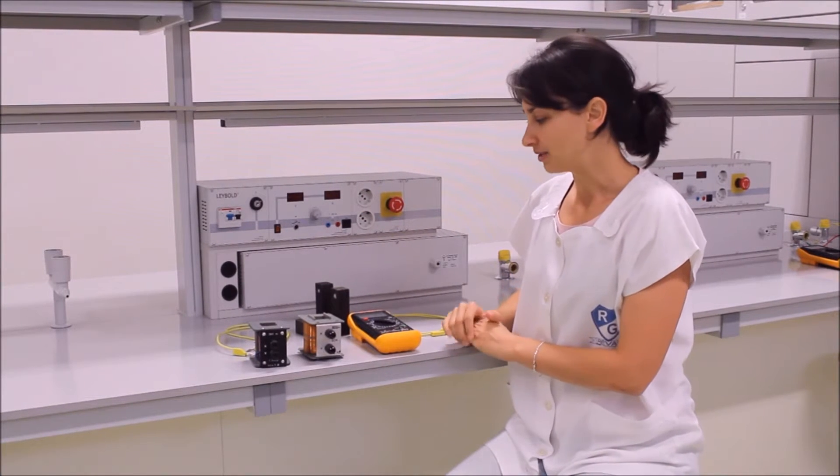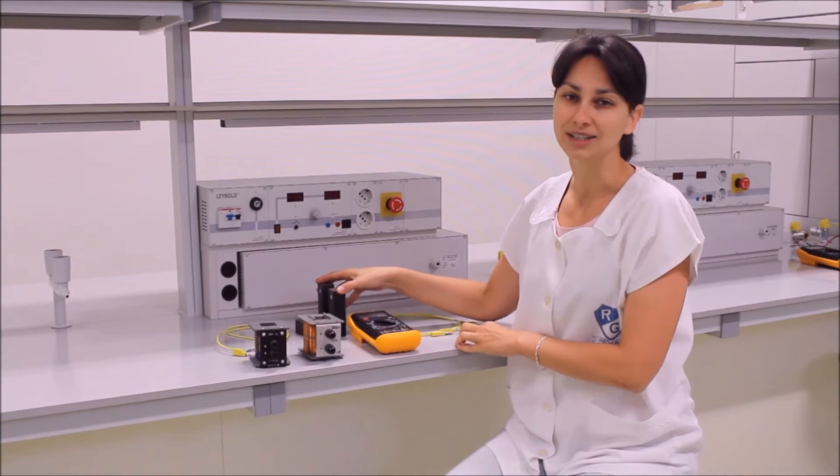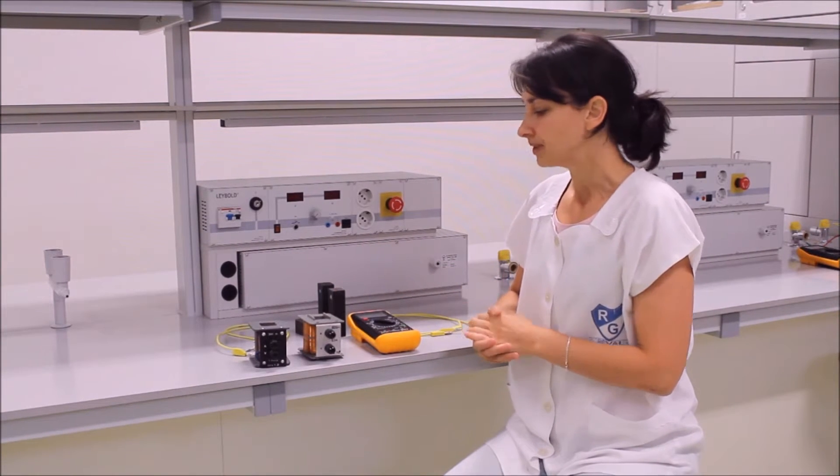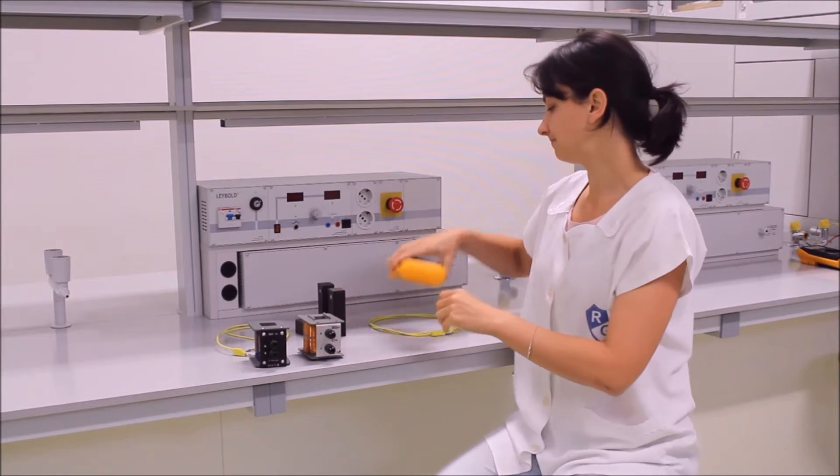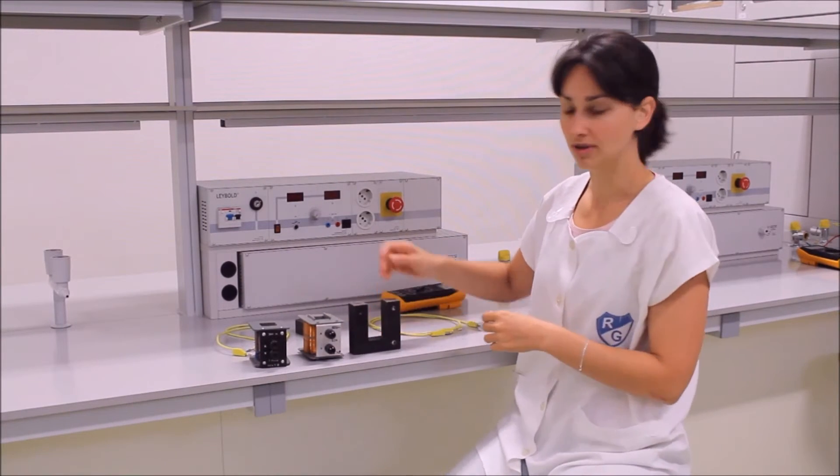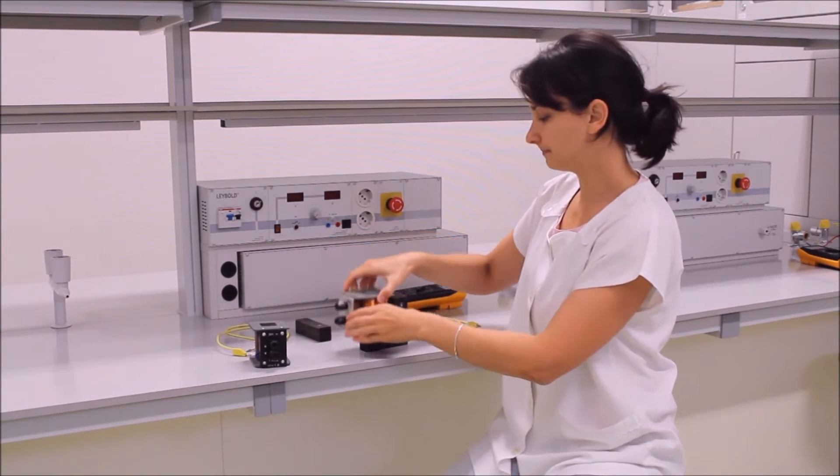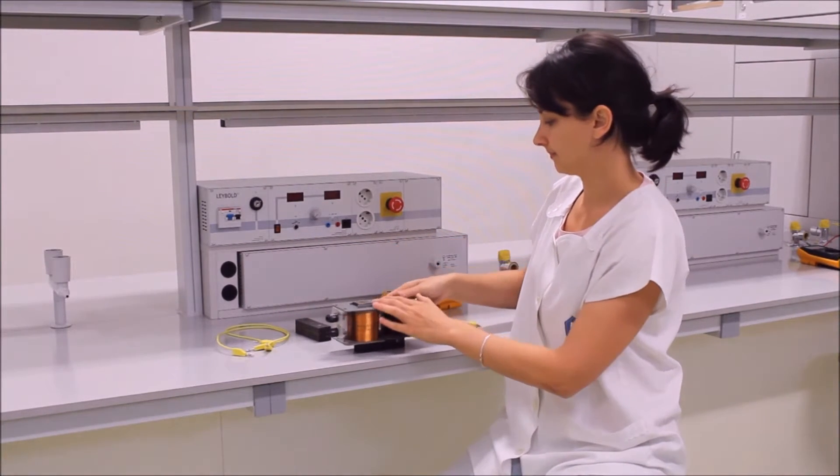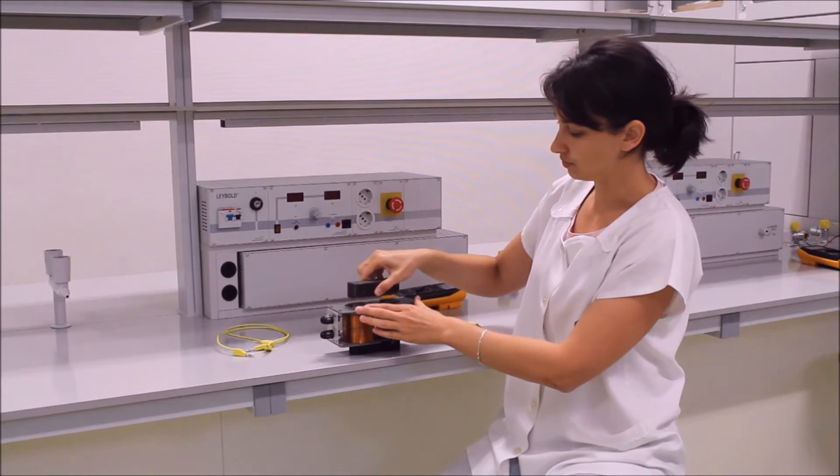Ismert, hogy a transformátor közös vasmaggal ellátott több tekercsből, általában kettőből áll. Rakjuk is össze a modelt. Tehát erre a vasmagra ráöltöm a két tekercset, és zárom a vasmaggal.